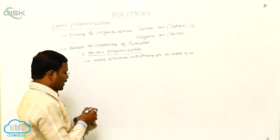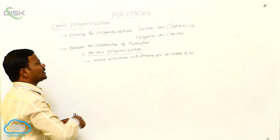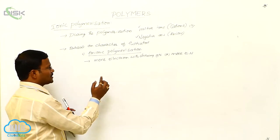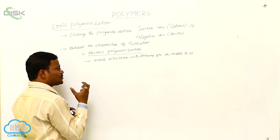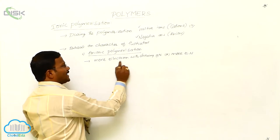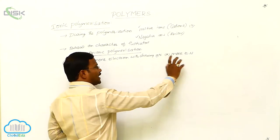So which type of monomers generally participate in anionic polymerization to produce polymers? Those monomers which consist of or which are made up of more electron withdrawing groups or more electronegative groups. Such type of monomers generally participate in anionic polymerization to produce our desired products.